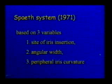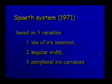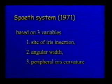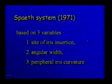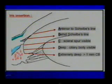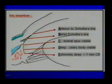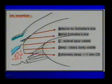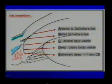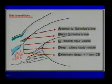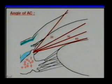Spaeth proposed another system based on three variables: the first is the site of iris insertion, the second is the angle width, and the third is the peripheral iris curvature. The iris insertion can be A, B, C, D, or E. A means insertion is anterior to Schwalbe's line, B means behind Schwalbe's line, C means scleral spur is visible, D for deep means ciliary body is visible, and E extremely deep means one millimeter of the ciliary body is visible.